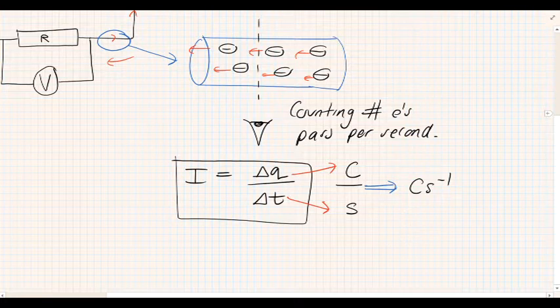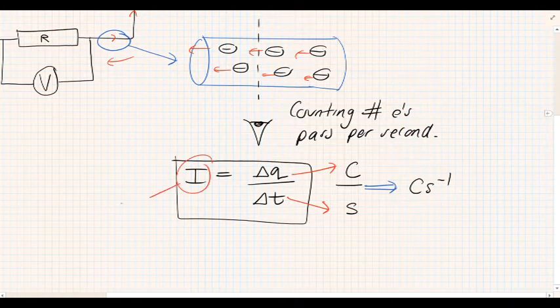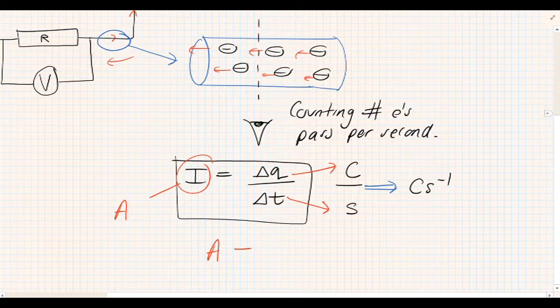Now the easy way to go about that is just to go with amps. So amps and coulombs per second are equivalent and you can use the units either way.